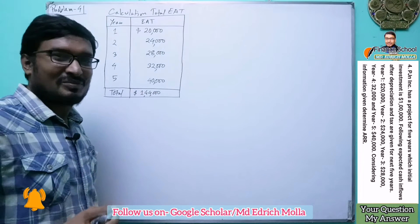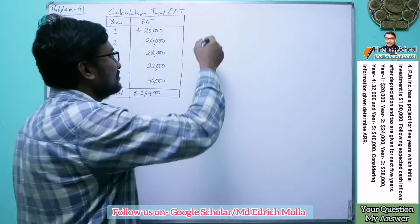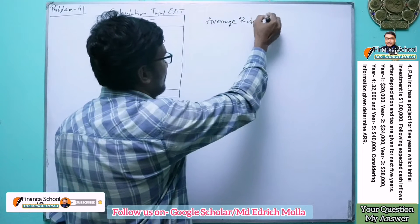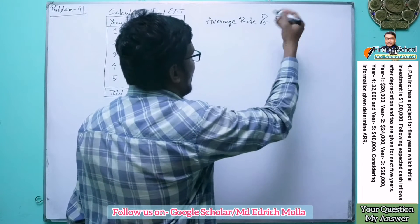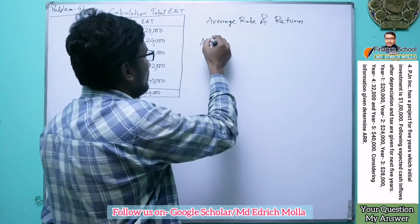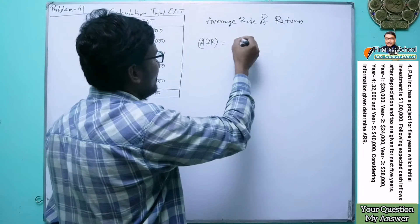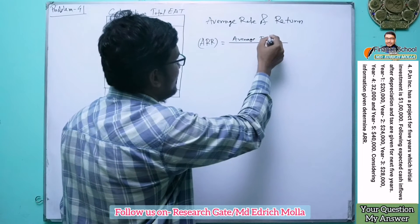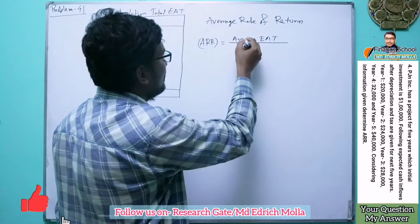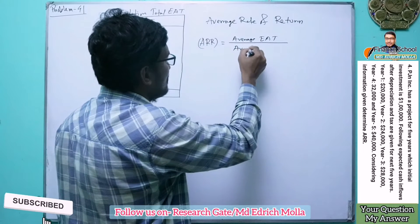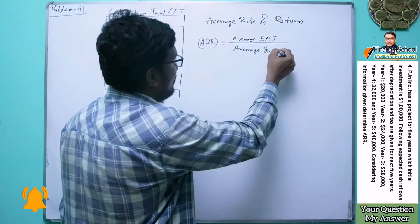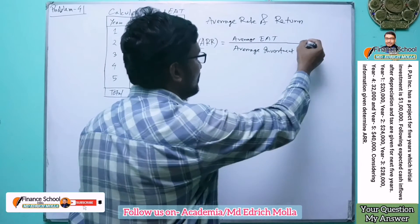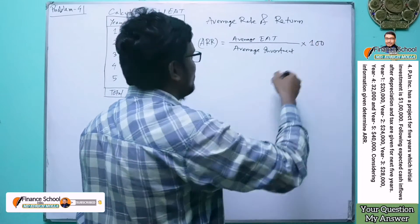Our main task is to find out the average rate of return. The formula is: ARR = (Average Earnings After Tax ÷ Average Investment) × 100.